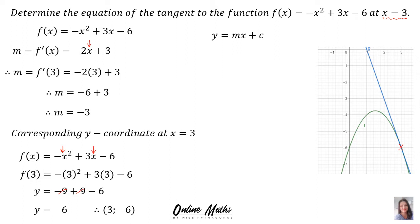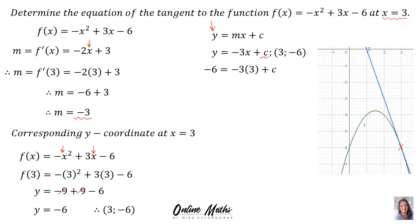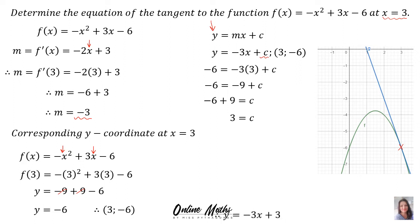We are looking for the equation of the tangent y = mx + c. The gradient m is -3, so we substitute -3 in place of m. To find c, we use the point (3, -6) because that point lives on the function. Substituting: in y's place we put -6 and in x's place we put 3, giving -6 = -9 + c. Solving, c = 3. Therefore the equation of the tangent is y = -3x + 3.